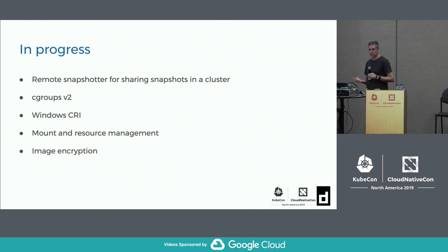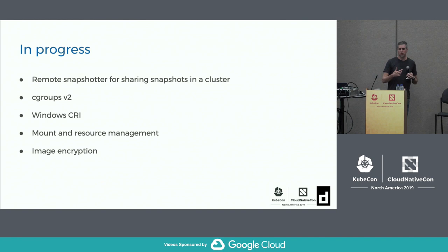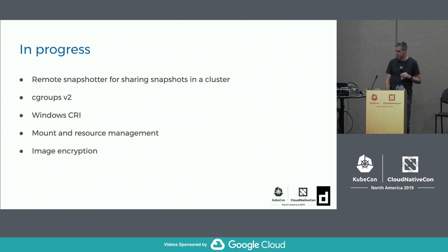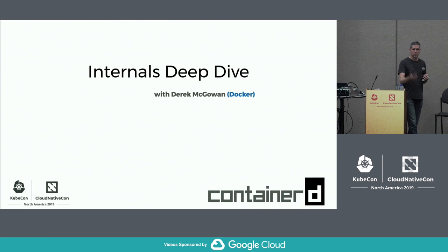Looking toward Container D 1.4, in-progress work includes remote snapshotter support for sharing snapshots in a cluster — there's interest from Google CRFS, CERN's CVMFS, and others who want to pre-populate a shared file system rather than pulling images to every node. Cgroups v2 support is actively being worked on. The CRI team is working on more complete Windows support with CI coverage, better mount and resource lifecycle management, and finalizing image encryption support through Kubernetes.